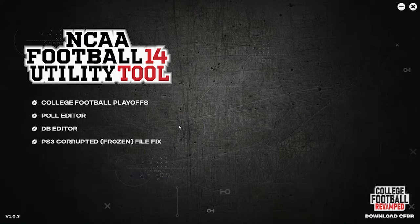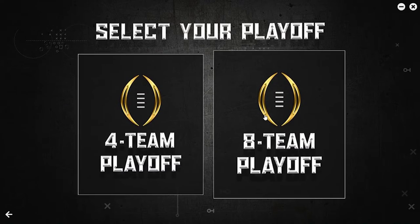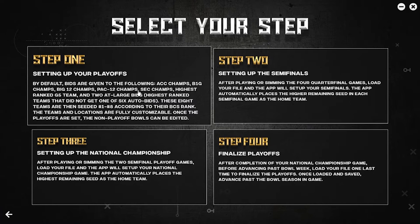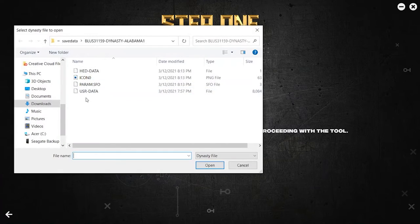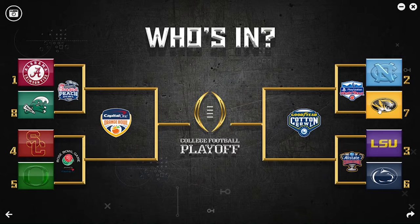Now if you want to do an 18-team playoff, here's how. I loaded one of my backup files to put it back at the bowl season. Go to College World playoffs and this time do 18-team playoff. There's going to be an extra step but it's straightforward. Go to Step 1 plus, find your file, same dynasty, get the user data. The defaults are the winner of each conference, I believe.